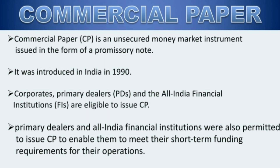There are four types of commercial papers. One is promissory notes. Second one is drafts. Uske baad hai checks aur uske baad aata hai certificate of deposit. Promissory notes is a written pledge to pay money. Draft is a three-party paper confirming the payment. Checks are drawn on a bank. And certificate of deposit is an acceptance by the bank of a specific sum of money from a depositor for a specific time.